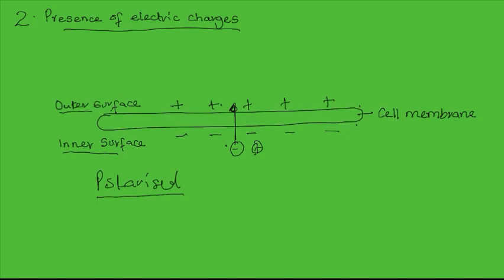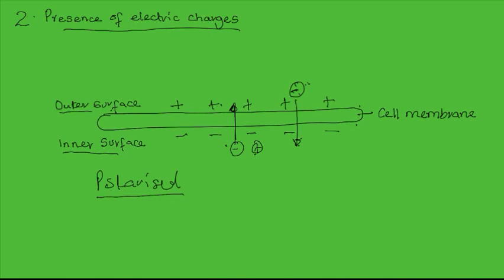On the other hand, a negatively charged particle would also cross the cell membrane faster from the outside into the cell, because the outside is positive and the inside is negative. The negative charge on the inner surface attracts the negatively charged particles, which then move faster than neutral or positively charged particles into the cell. That is how electric charges affect the permeability of the cell membrane and the rate at which substances move across.